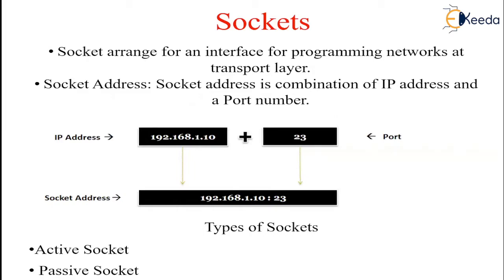A connection can be fully specified by the sockets at each end. We also call a socket a type of tag that individually identifies and gives a connection such that requests and replies are sent and issued by the directly mapped application running on the device. Sockets provide an interface for programming networks at the transport layer. A socket address is a combination of IP address and port address, as shown in the figure.